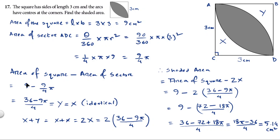So if 9 is the area of the square and 9 by 4 pi is the area of this sector, then I'll get the value for Y. So 9 minus 9 by 4 pi equals Y. And since these two are identical, X and Y, the value for Y is equivalent to the value of X. Y and X are identical.